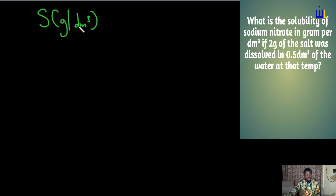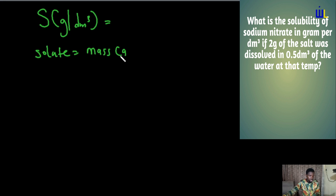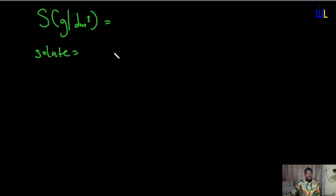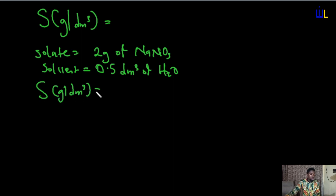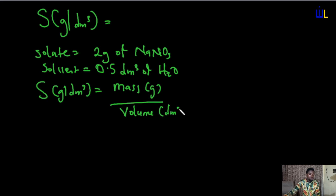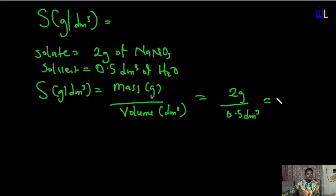The general rule about solubility: look at the unit on top — once it's gram, your solute has to be in gram; if the one below is dm³, your solvent has to be in dm³. In this question, our solute is 2 grams of NaNO₃ and our solvent is 0.5 dm³ of water. So solubility in gram per dm³ equals mass of solute in gram divided by volume in dm³, which is 2 g ÷ 0.5 dm³ = 4 g/dm³.